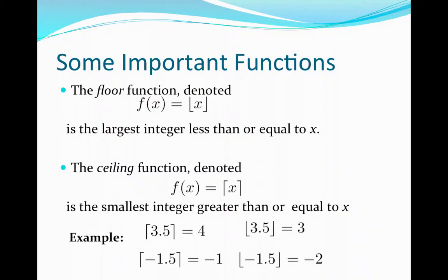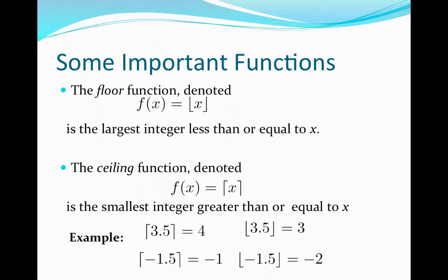We mentioned in the learning outcomes that it's very important to understand what the floor and ceiling functions are. The floor function is denoted with floor brackets — brackets that have a little floor in them. This function is defined from the set of real numbers to the set of integers. For every real number x, the floor of x is defined to be the largest integer less than or equal to x. For example, the floor of 3.5 means we drop the decimal part, so 3.5 gets mapped to 3. Similarly, 3.1, 3.2, 3.3, 3.7, 3.9 would all map to 3. The floor of any integer is itself, because that's the largest integer less than or equal to itself.